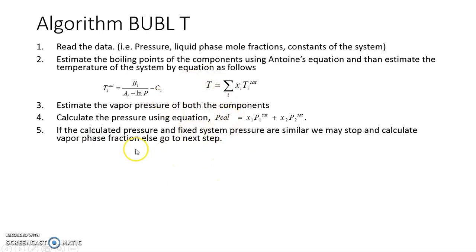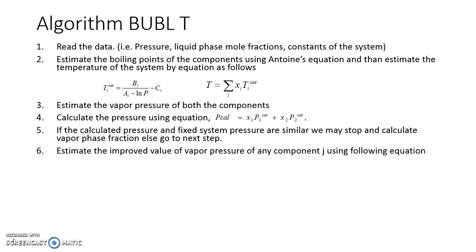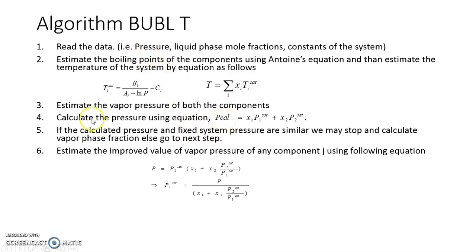We use a thermodynamic approach to improve the temperature. We modify Raoult's law to find P1_sat using the system pressure — not the calculated pressure. A common mistake students make is using the calculated P here; this P must be the fixed system pressure. This gives a new value of P1_sat based on the previous temperature, fixed x1, x2, and fixed pressure.